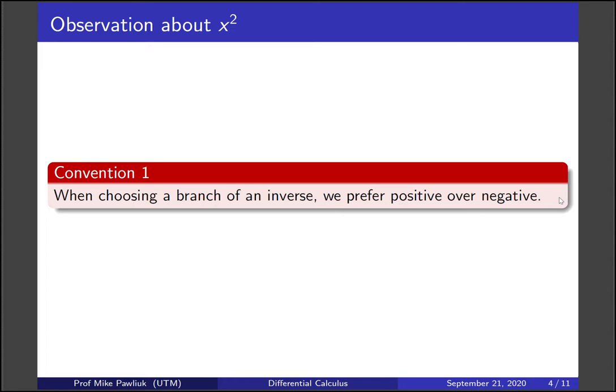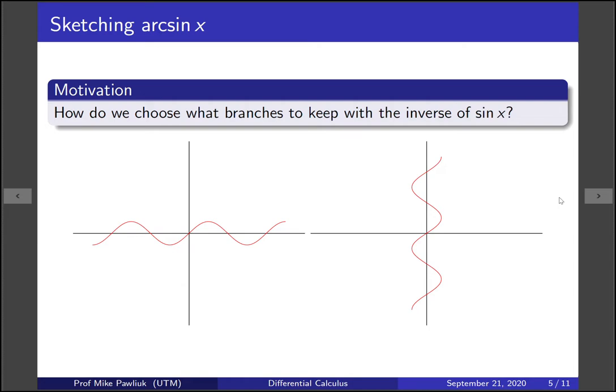Now let's look at a second example. How do we choose what branches keep with the inverse of sine? So here's a picture of sine of x, and when we reflect it across the line y equals x, we get this shape.